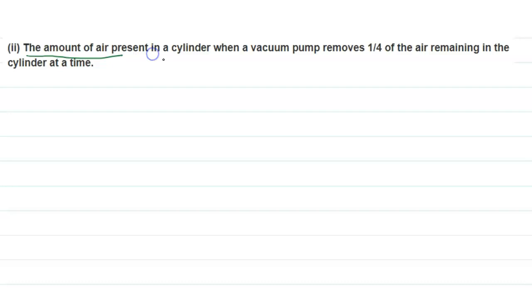The question is: which situation is an AP series or not? The situation is the amount of air present in a cylinder when a vacuum pump removes 1/4 of the air remaining in the cylinder at a time. So first of all, we consider in the cylinder the air will be 100.